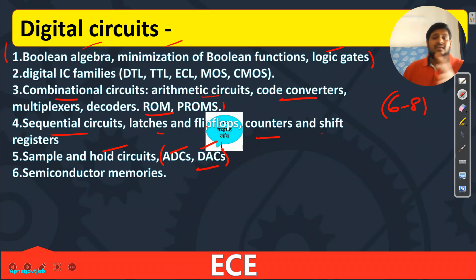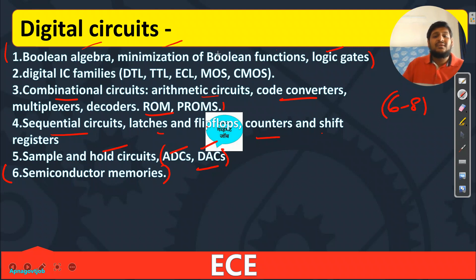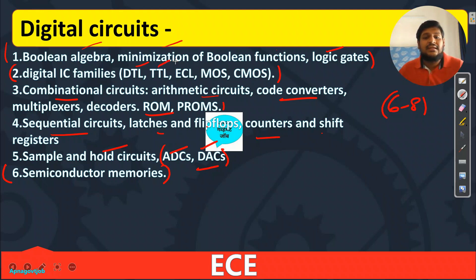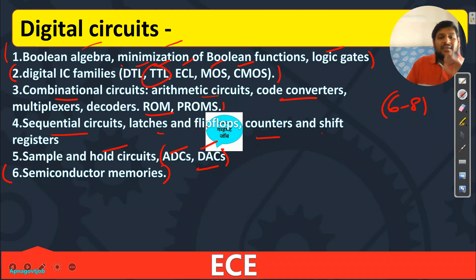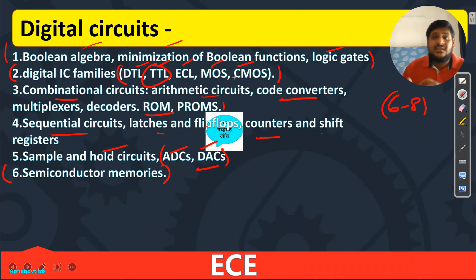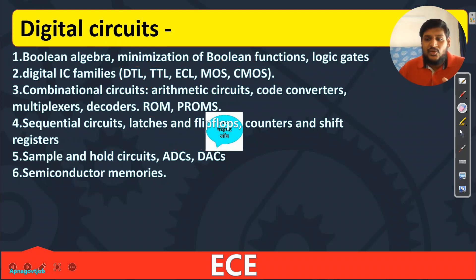For DAC types: Binary Ladder and R2R. Then Semiconductor Memories — RAM, ROM. After that, Digital IC Families: study the comparison between DTL, TTL, ECL, MOS, and CMOS only. No need to study in depth how TTL works internally with transistors — just do the comparison. That is enough. Then moving to Computer Organization and Architecture (COA).